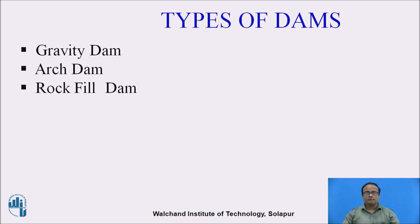The types of DAMs depend upon different types of material used in construction. It may be an earthen DAM, masonry DAM, concrete DAM, or rock fill DAM. Some DAMs are classified depending upon the various forces acting on the DAM and how those forces are resisted — whether by arch action or by the self-weight of the DAM. Here we will discuss gravity DAM, arch DAM, and rock fill DAM.